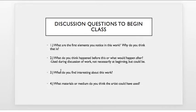The fourth question would be: what materials or medium do you think the artist could have used? A lot of times students get stuck on the focus of oil on canvas or acrylic on canvas, especially when we think back to the earlier units on Europe and the Americas. So it's interesting to see them try to figure out what other types of mediums artists used, how they used them, and why they used them.